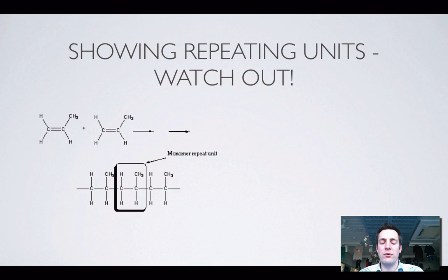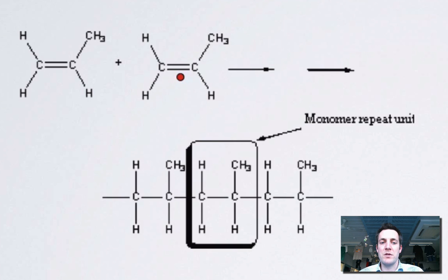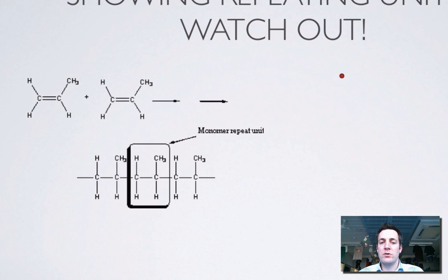Things to watch out for when you're drawing these repeating units. Well, one of the main problems that people have can be avoided if you draw your alkenes like this. That is to say, you've got your double bond here and four groups attached to it. If you just look at what this molecule is, this is propene. So I could also draw propene in this way.